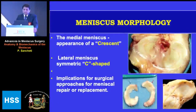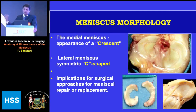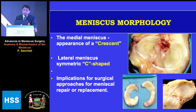The medial meniscus and the lateral meniscus have typical shapes. The medial is crescent-shaped and the lateral is C-shaped. The medial meniscus is less mobile and therefore we see more tears in the medial meniscus compared to the lateral meniscus, which has the popliteal hiatus and is more mobile, and therefore is less torn.